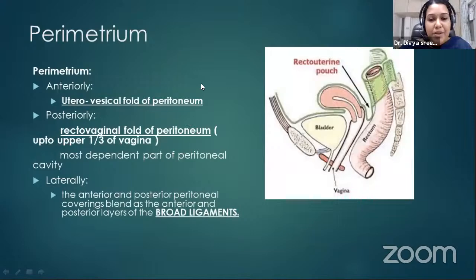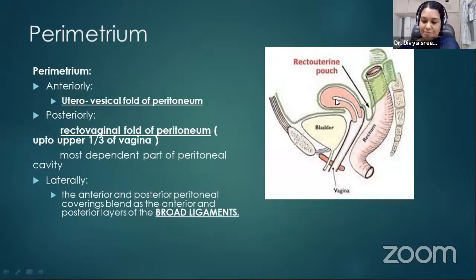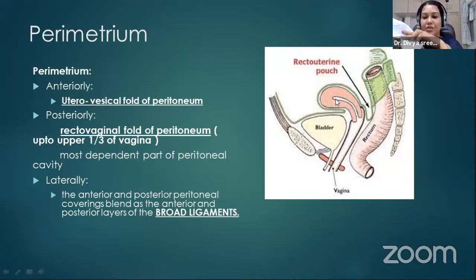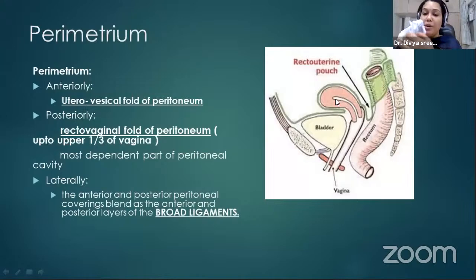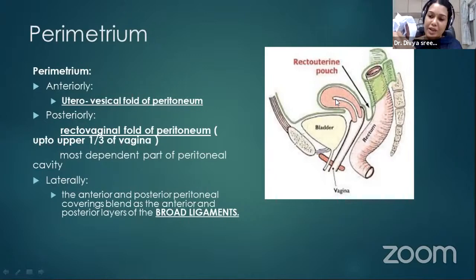The perimetrium is the outer peritoneal covering of the uterus. Anteriorly, the peritoneum forms the uterovesical pouch, and posteriorly it forms the rectouterine pouch (pouch of Douglas). Laterally, the two peritoneal layers fuse together to form the broad ligament, which is attached to the lateral pelvic wall.